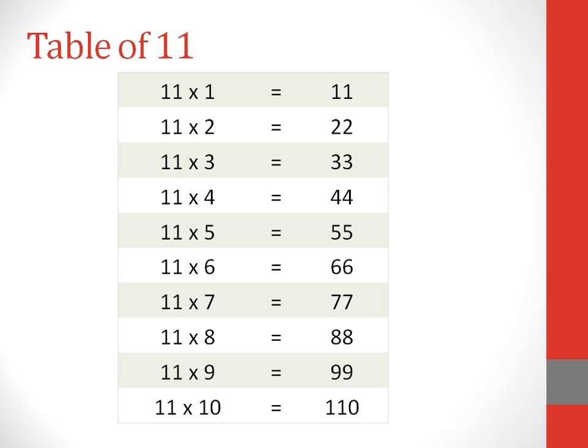Table of 11. 11 ones are 11. 11 twos are 22. 11 threes are 33. 11 fours are 44. 11 fives are 55.